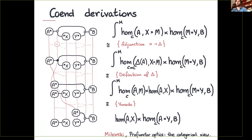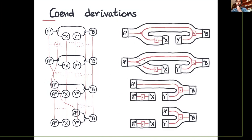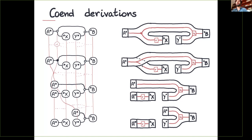Going further with pointed profunctors: each time we have a view v and an update u, we can follow the reasoning back. We use the diagonal profunctor, and the co-unit of the adjunction gives us the common order. So we can also reason about these things in terms of elements.